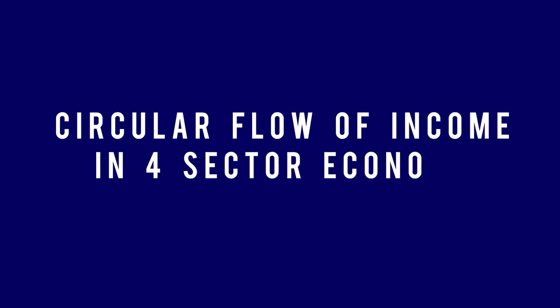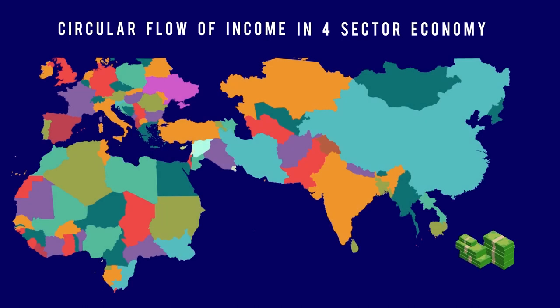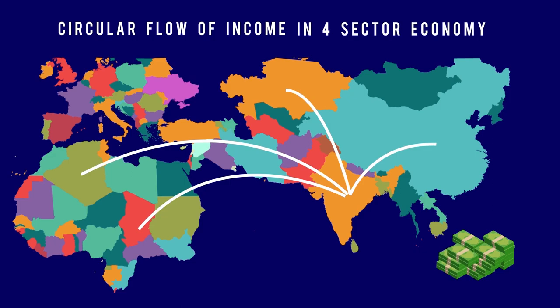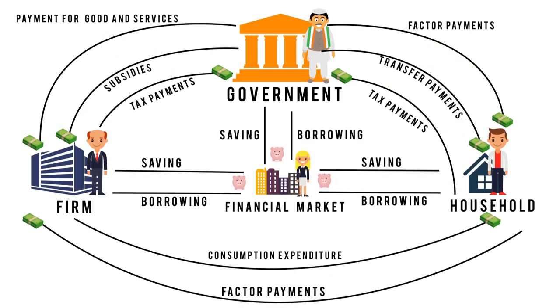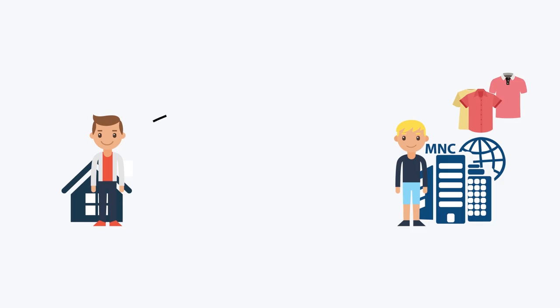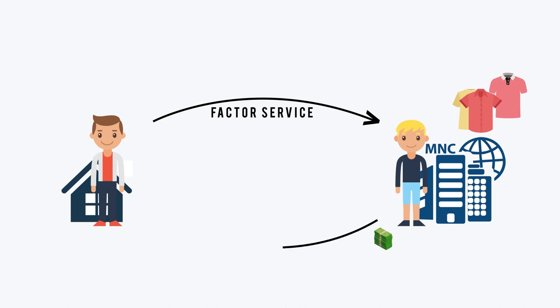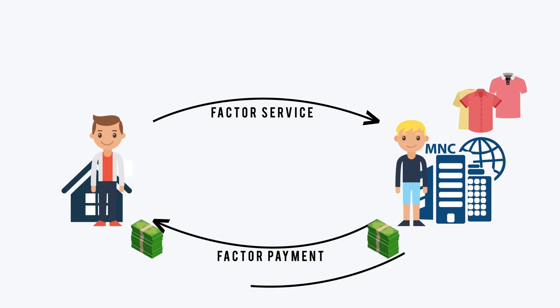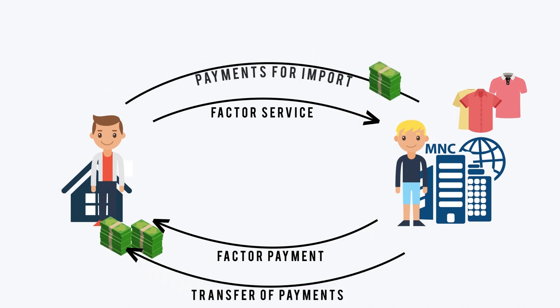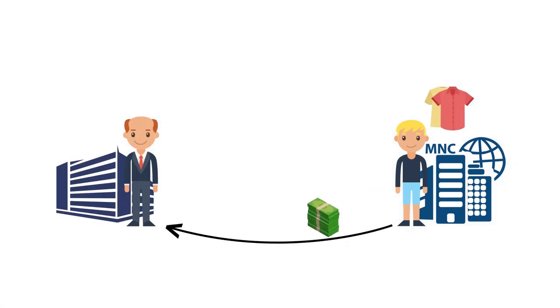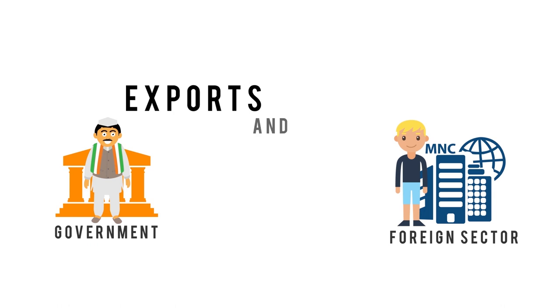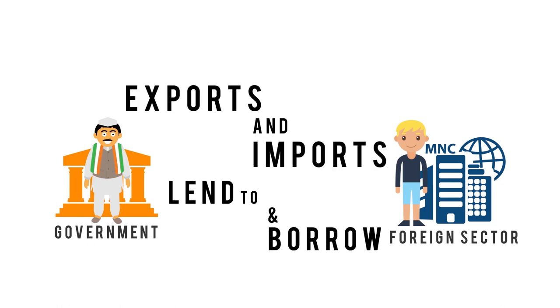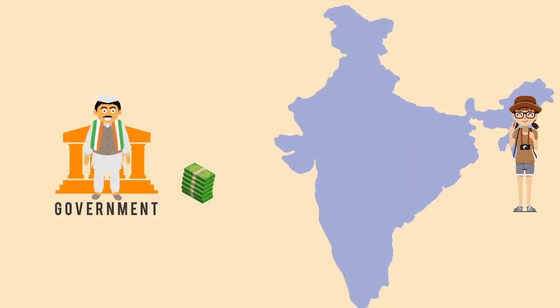In a four-sector economy, foreign sector is introduced into an open economy with trade relations. Households provide factor services to the foreign sector and receive factor payments and transfer payments; they also make payments for imports. Firms receive revenue from the foreign sector for sale of goods and services and make payments for imports. Like the business sector, government also exports and imports goods and services, lends to and borrows from foreign countries, and receives payments from foreign tourists.